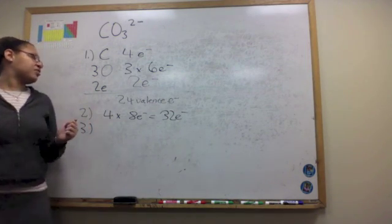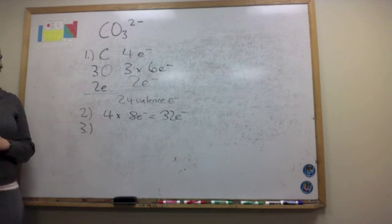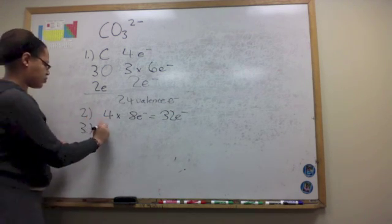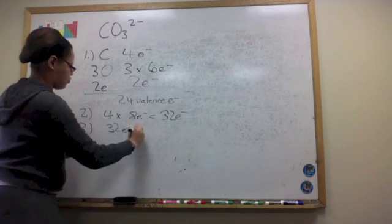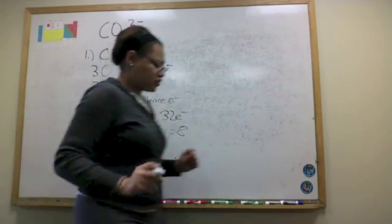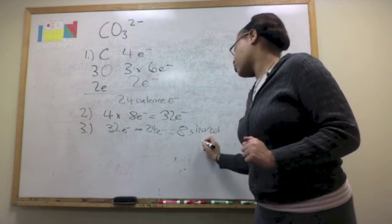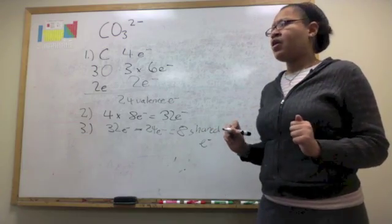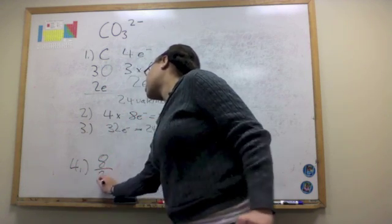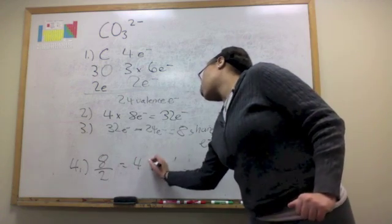In step 3, we subtract our 24 valence electrons from 32 to determine how many electrons will be shared in our Lewis structure. This gives us 8 shared electrons. In step 4, we divide 8 by 2, which gives us the number of bonds we will draw in our Lewis structure: 4 bonds.